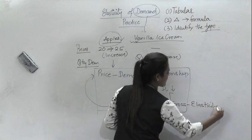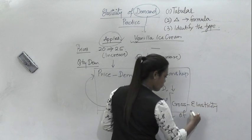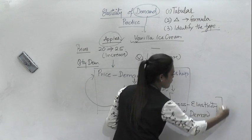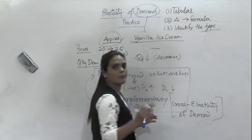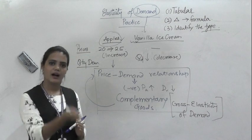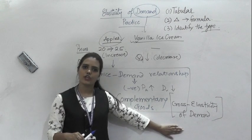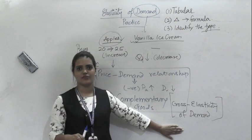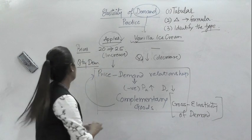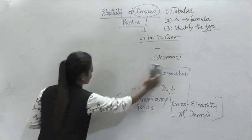When a question talks about two or more products and the effect of a rise or fall in price of one product on the demand of the other product, it refers to the cross elasticity of demand.